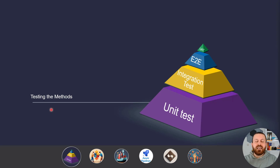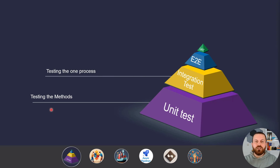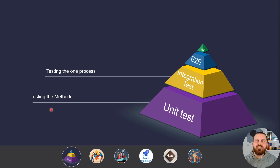Unit tests are a kind of test where you test a method — you should test the smallest unit of your code. For integration tests, you test a process. You pick methods in a process from the first method until the last method inside your application and test it. In some cases, you need to test the connectivity of your application to some infrastructure components or to other applications.